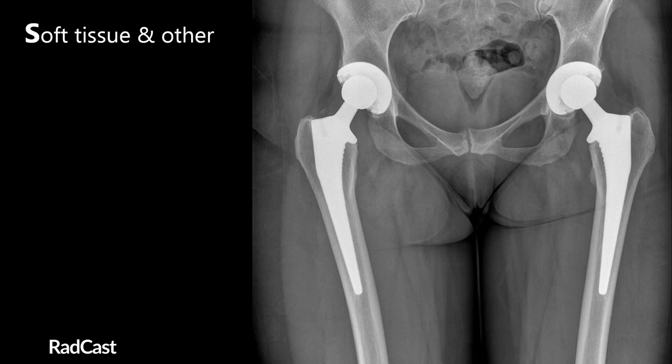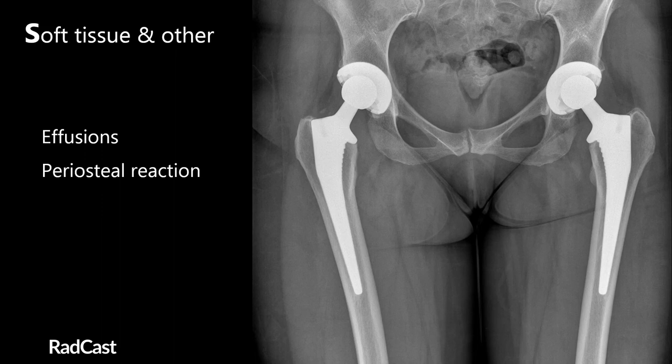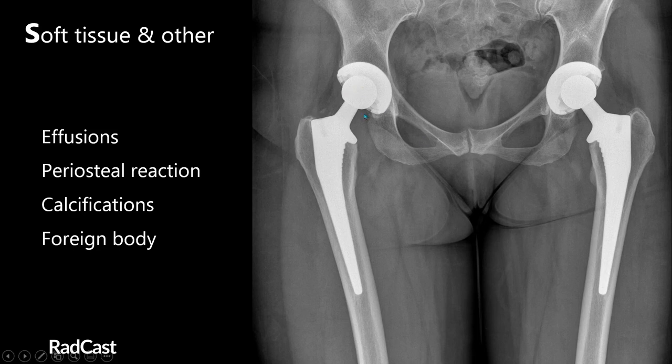To finish off our assessment we look at soft tissue and other. Here we're looking for any effusions in the soft tissue, for example with inflammatory joint diseases like rheumatoid arthritis. We might also see signs of a periosteal reaction, which could result from a healing fracture or cancer, calcifications such as phleboliths or arterial calcifications, and foreign bodies — like the bilateral total hip replacements visible here, where both the femoral head and acetabula have been replaced.